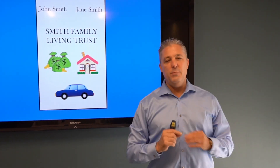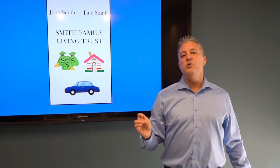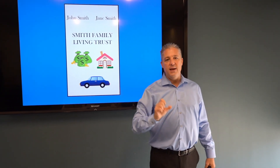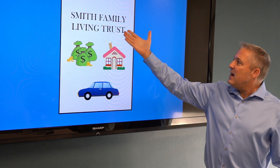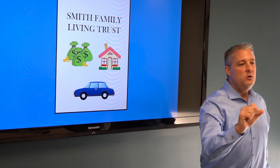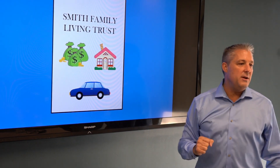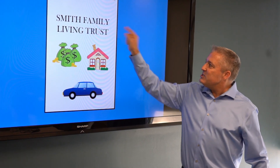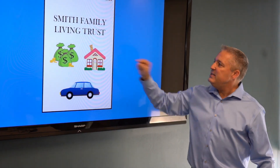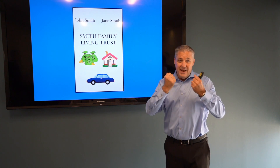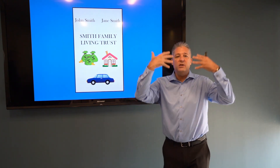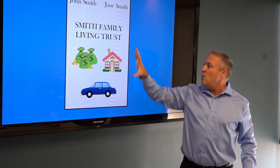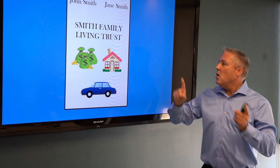The first asset we typically put into a trust is the home, and here's how we do it. The way you put any asset into a trust is you retitle the asset into the name of the trust. So this trust has a title — the Smith Family Living Trust — and the date you signed your trust is part of that title, so it would be the Smith Family Living Trust dated whatever that date was. We take this title and put it right on the deed of the home. We take John Smith and Jane Smith's names off the title and replace it with the Smith Family Trust. Now John Smith and Jane Smith own their trust, and the trust owns their home.